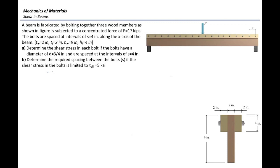The force P is applied at the middle of the beam. The dimensions for the cross-section of the built-up member are provided, and we want to solve this problem in two different cases. First, if the allowable shear stress in the bolt is 5 ksi, how much is the required spacing between the bolts? In the second case, if the spacing between the bolts is given as four inches, how much is the shear stress developed in each bolt? To solve these problems, we need to determine the shear force in the element by drawing the shear diagram. The force acts at the middle of the beam symmetrically, so each side gives a reaction force of P over 2.